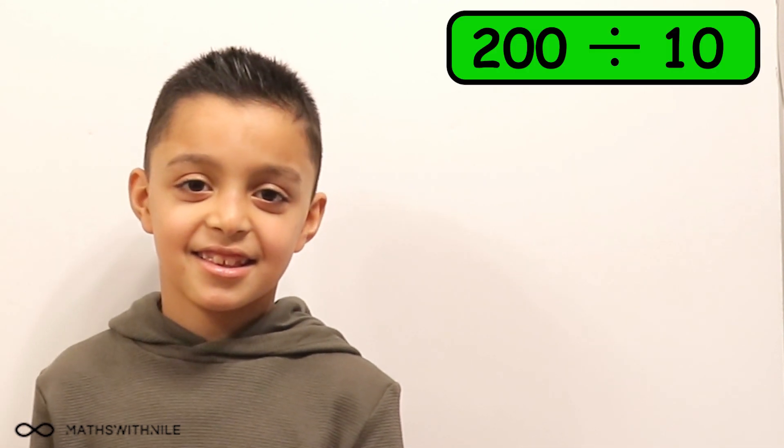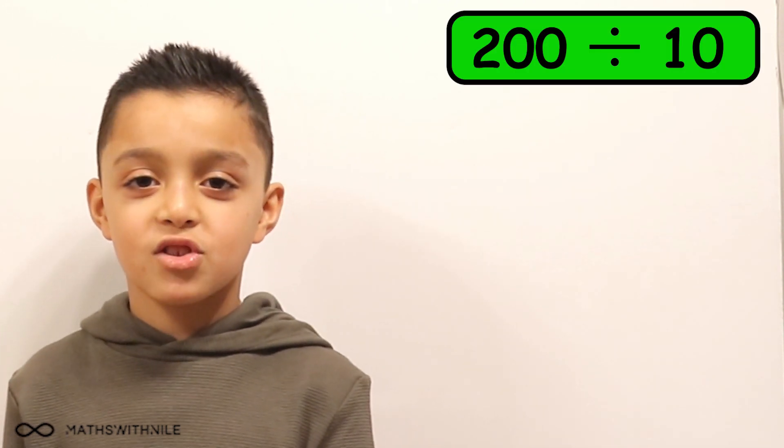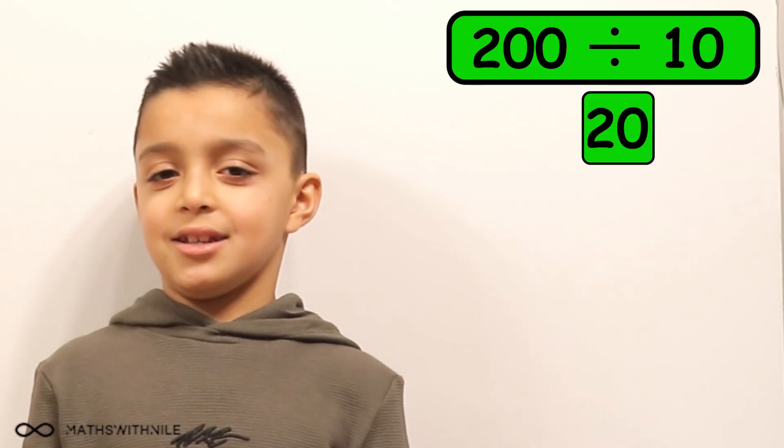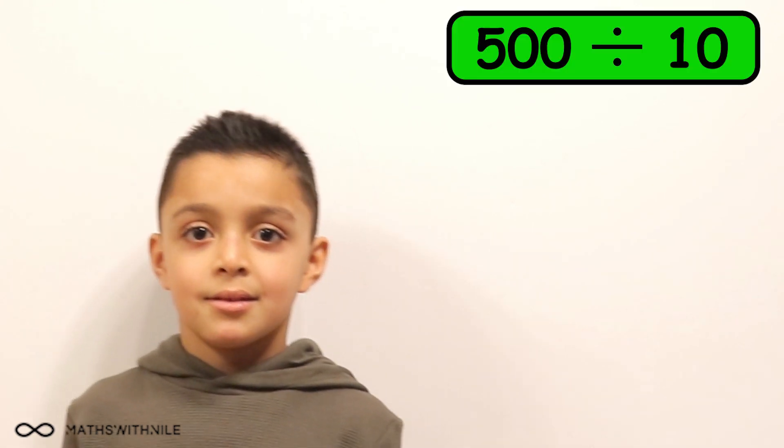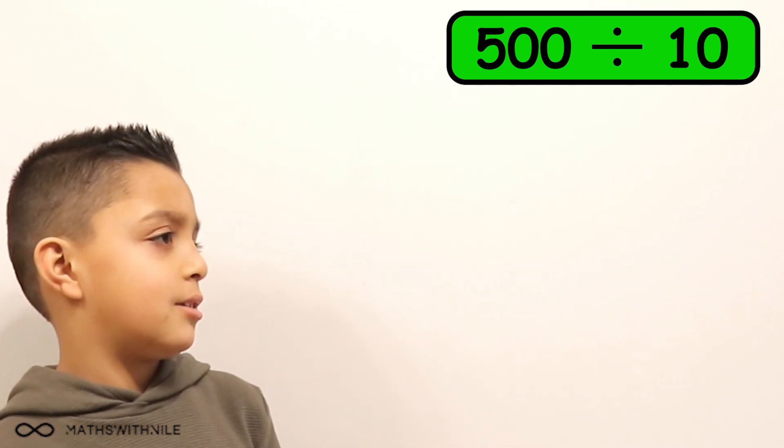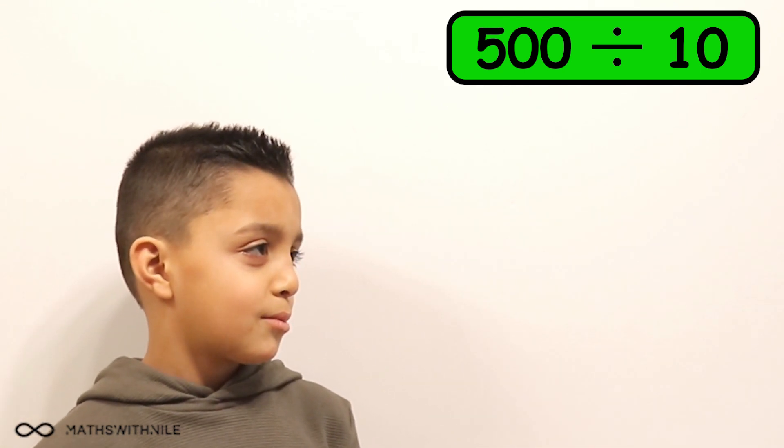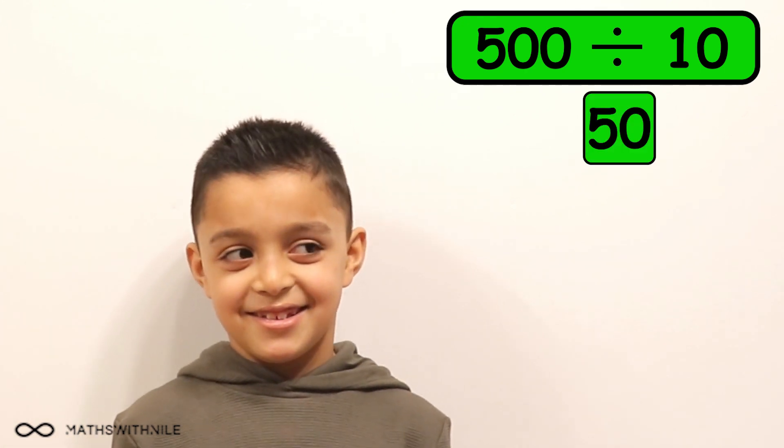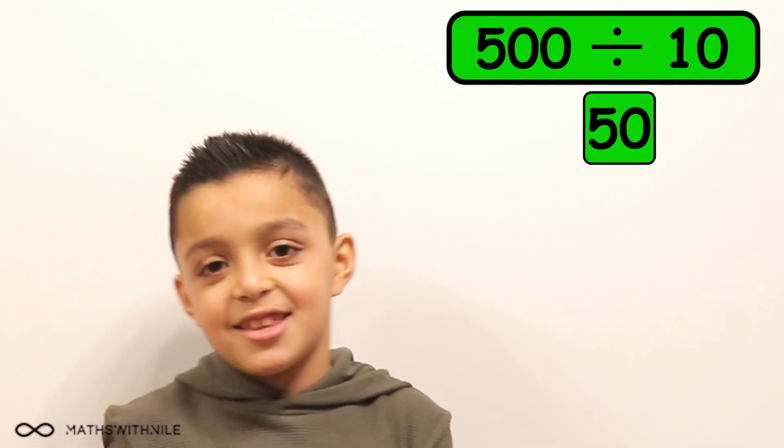What is two hundred divided by ten? Two hundred divided by ten equals two. No, wait, no. Twenty. Okay. What is five hundred divided by ten? Five hundred divided by ten... You just take a zero off, Niall. Fifty! Yes. Yes. When you divide by ten, you can just get rid of one of those zeros. Yep. Okay.